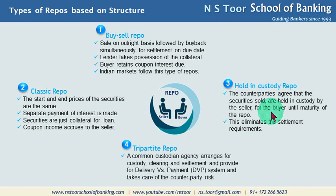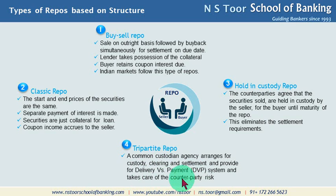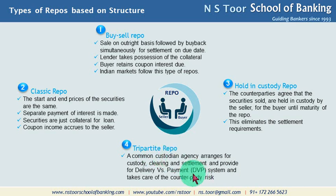The last type is the tripartite repo. In a tripartite repo, a common custodian agency arranges for custody, clearing, and settlement, and provides a delivery versus payment system, and also takes care of counterparty risk. There is third-party involvement, and that third party has facilities like custody of securities, clearing, and settlement, and also provides delivery versus payment. Additionally, they provide counterparty risk coverage — if the buyer or seller fails to buy back the securities or complete settlement, this third party will make up any resulting loss.